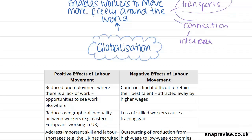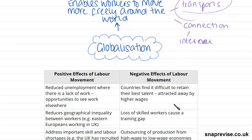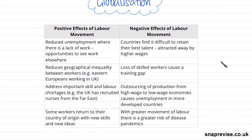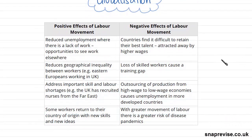As the world has become more interconnected, people have been able to move across the world more easily — not just for travel, but also for work purposes. Now we're going to look at the positive and negative effects of this labour movement of people around the world looking for work.